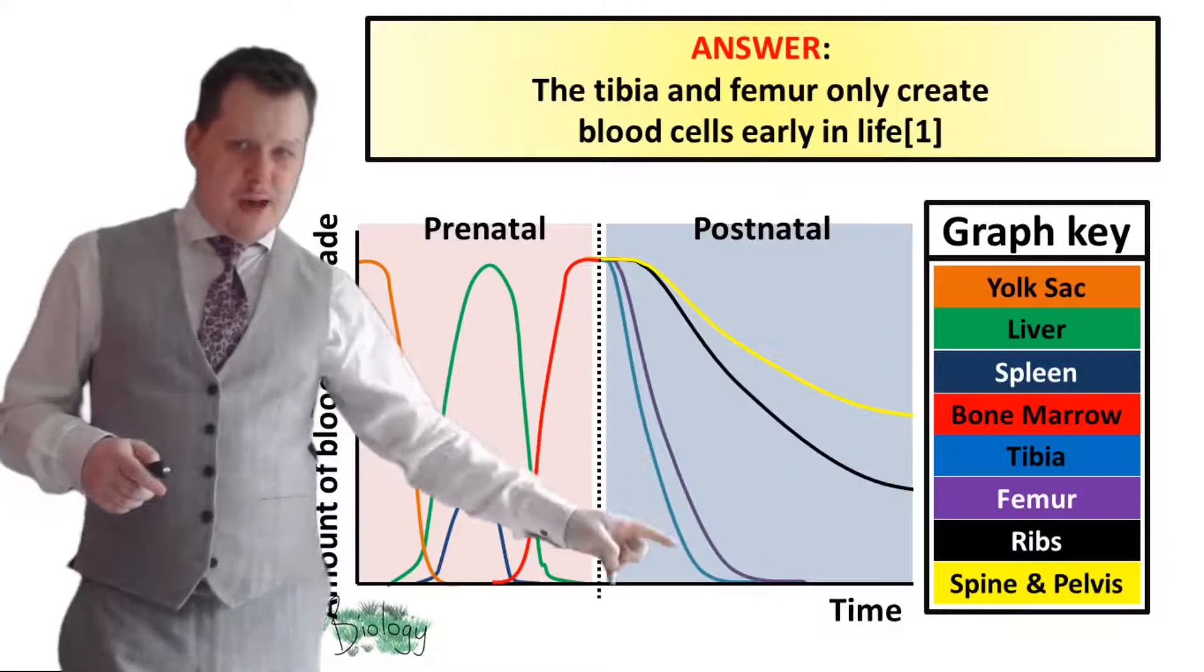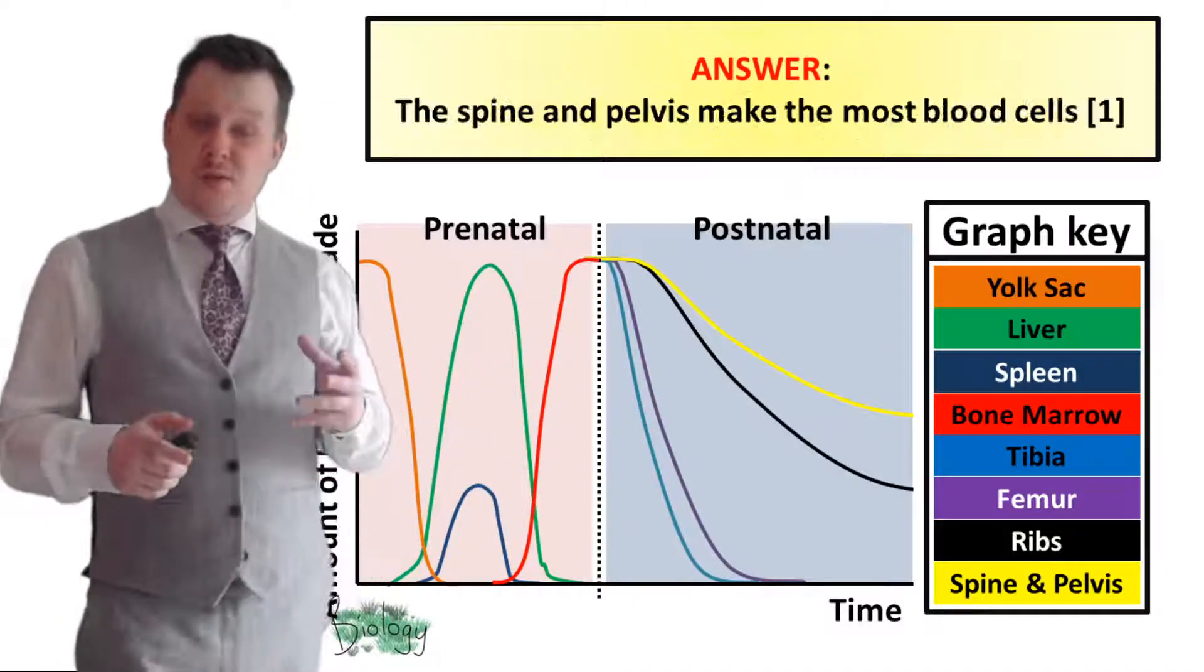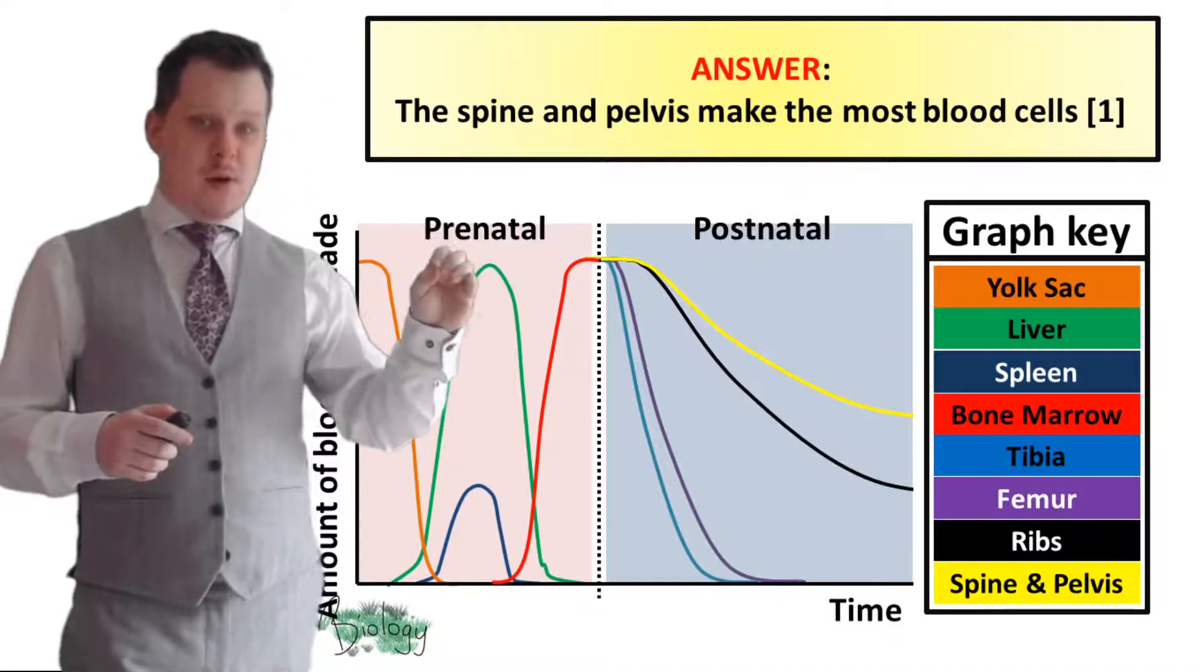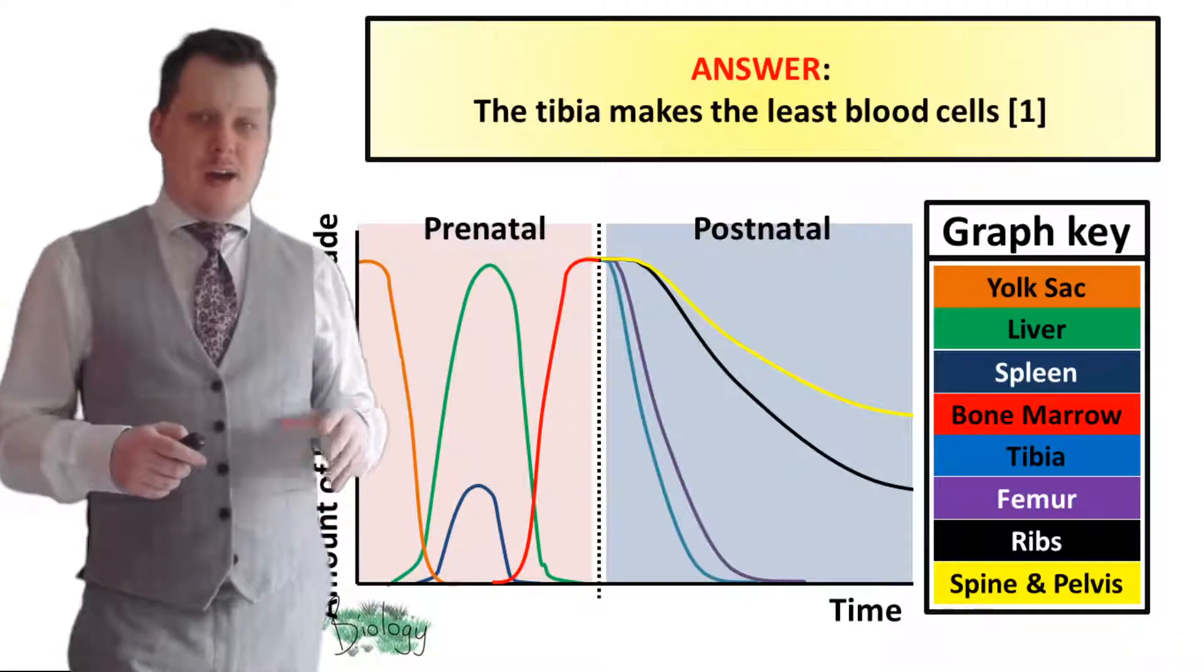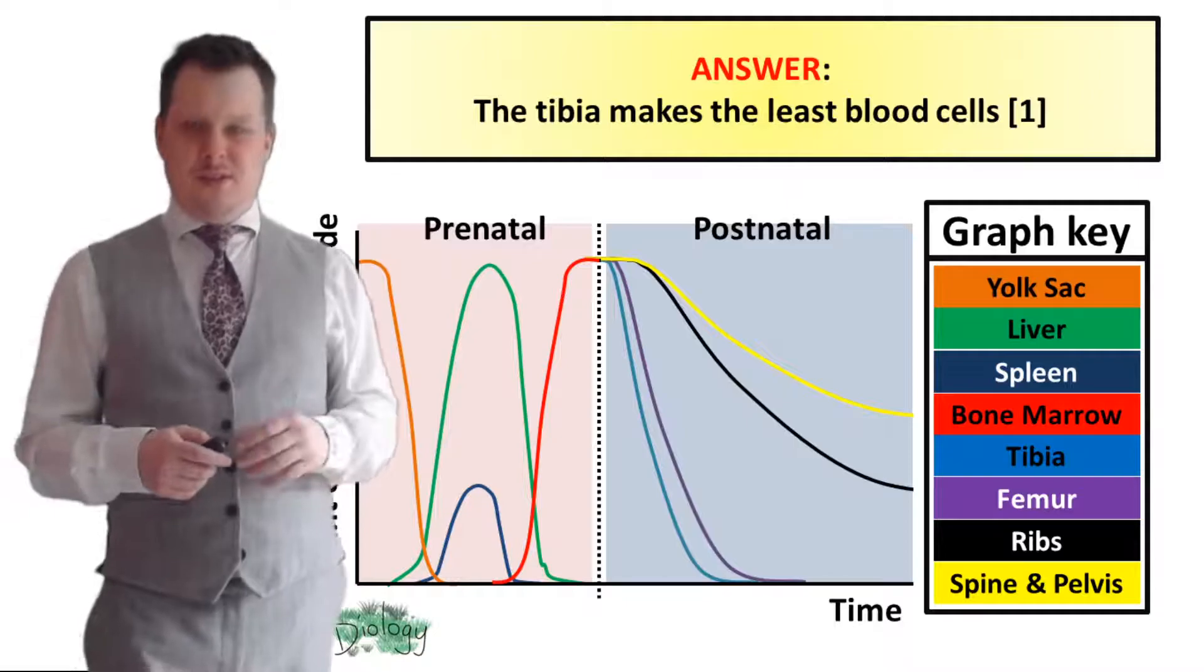And you can see that here with that purple and this blue line. The spine and the pelvis make the most blood cells. That's why the lines are higher than all the others. And the tibia makes the least blood cells.